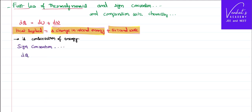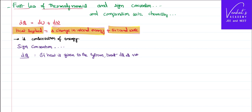The sign convention about heat DQ: if heat is given to the system — for example, by putting the gas system on a stove and supplying heat — treat that DQ as positive. On the other hand, if heat is given by the system, meaning the heat is released by the system, then treat that DQ as negative. That is the sign convention for DQ.